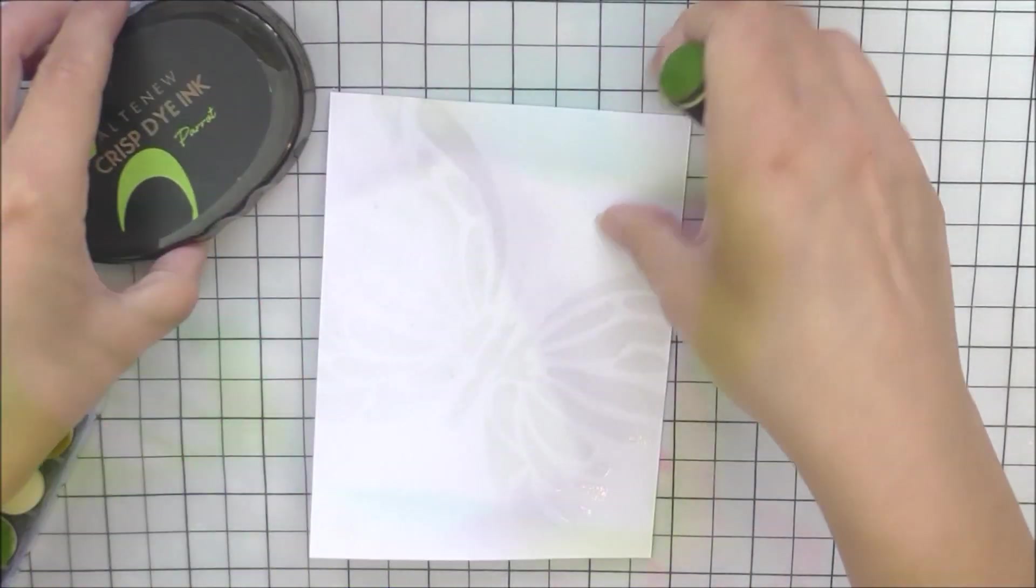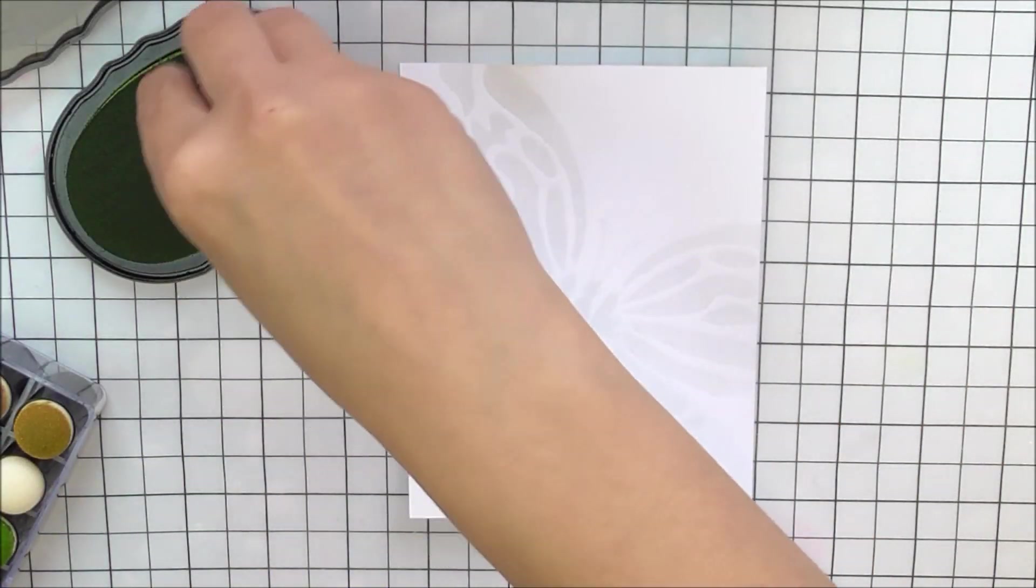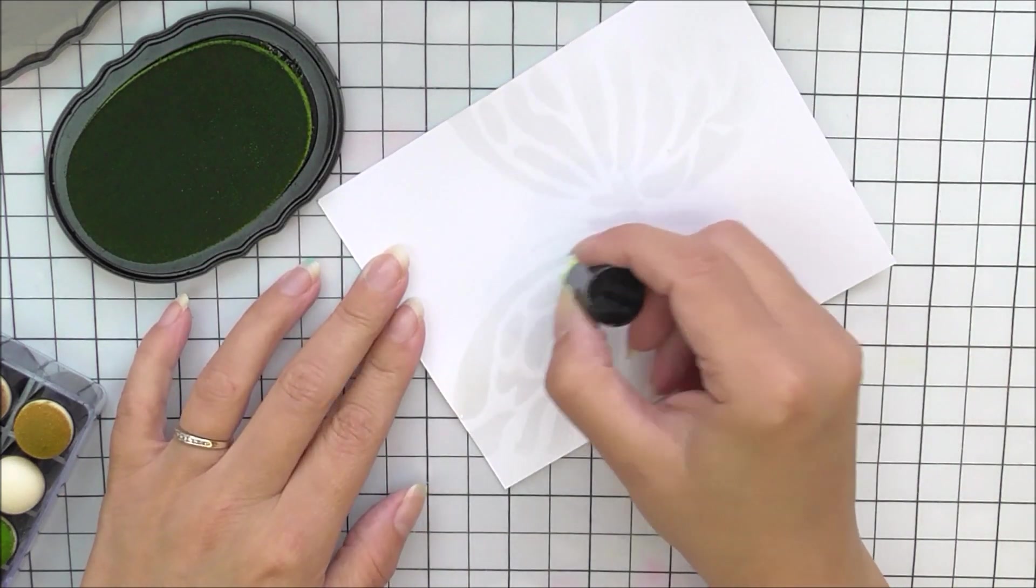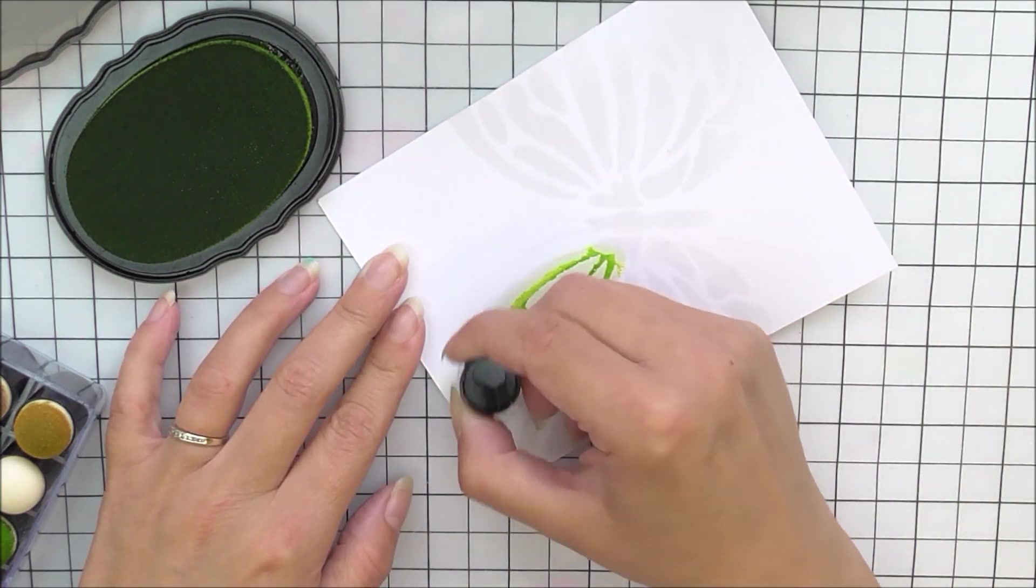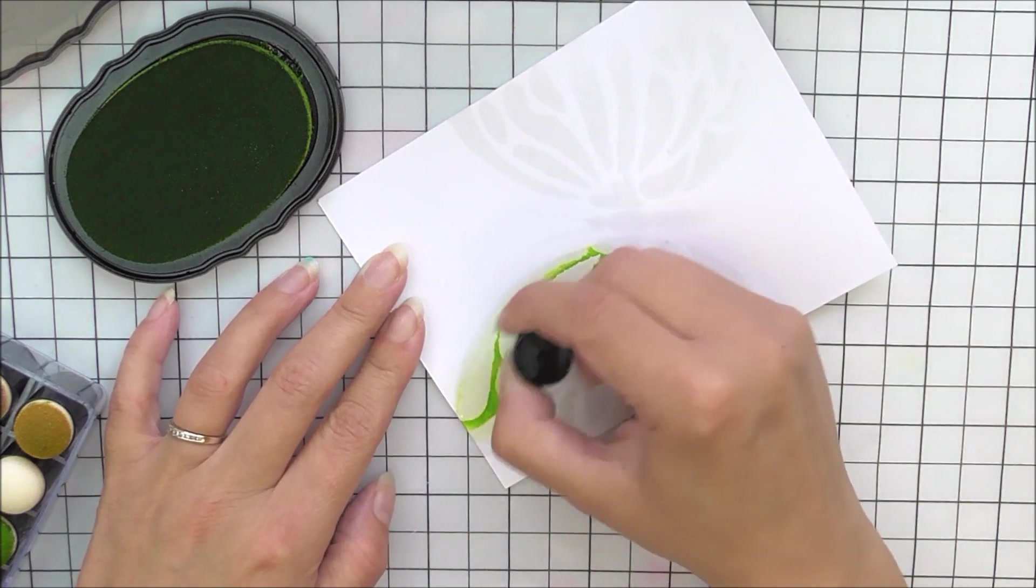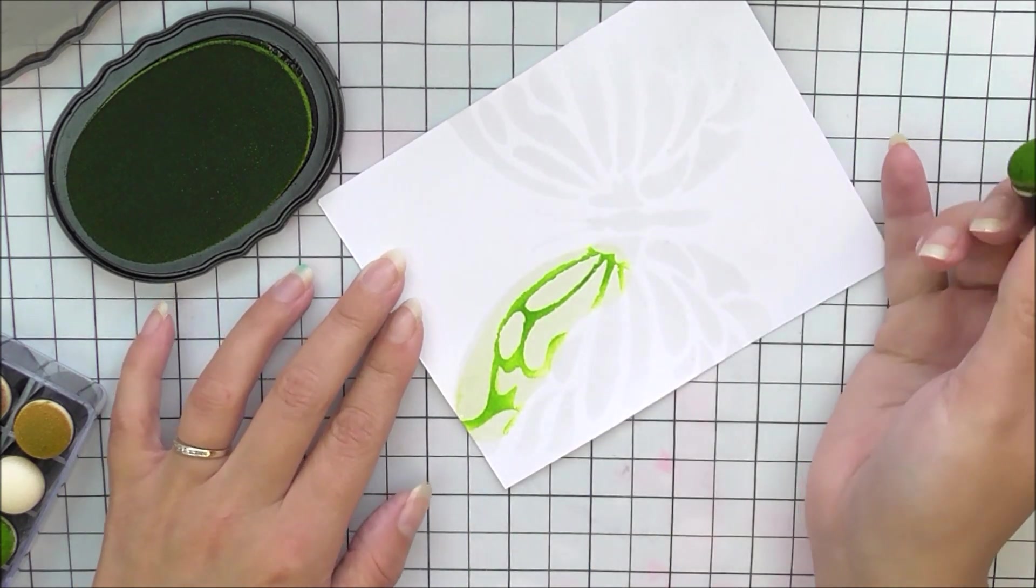I'm then going to take my second panel and I'm going to kind of color this butterfly in. I'm using smaller daubers for this one, little finger daubers. I do hold mine strangely, so I am sorry.